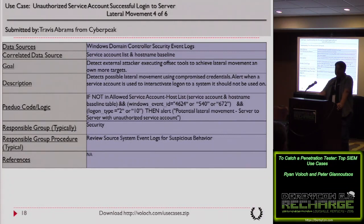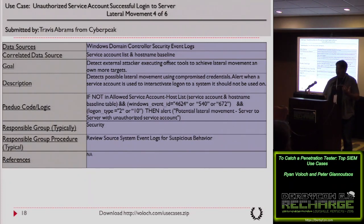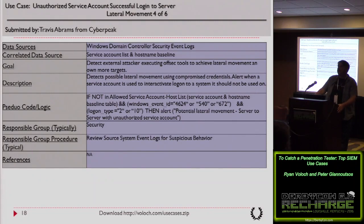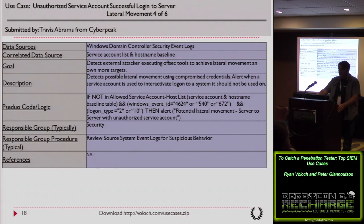Use Case 7: Unauthorized Service Account Successful Login to a Server. Data source: domain controller. Correlated data sources: a service account list and a hostname baseline table. The logic: this service account is allowed to log into these three or four servers — alert on anything else. If someone has stolen a service account and tries to use it on a different server, you'll catch it. Sometimes it's just a new sysadmin using it incorrectly. Quickly rule it out.